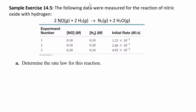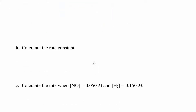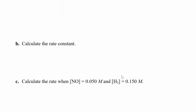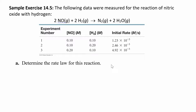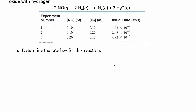Let's try one more of these problems where you change the concentration and see how it affects the rate. These are usually set up the same way: determine the rate law, then solve for K, and then given new concentrations, solve for the rate. So first, determine the rate law for this reaction - find two experiments that you're going to compare and solve for M and N.